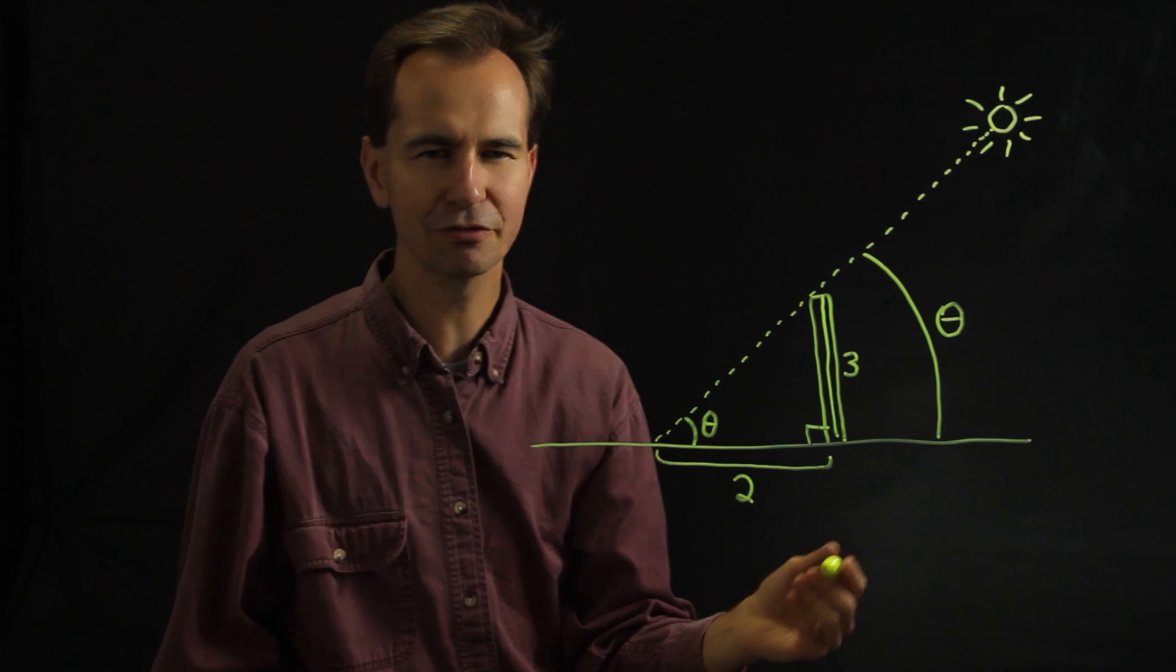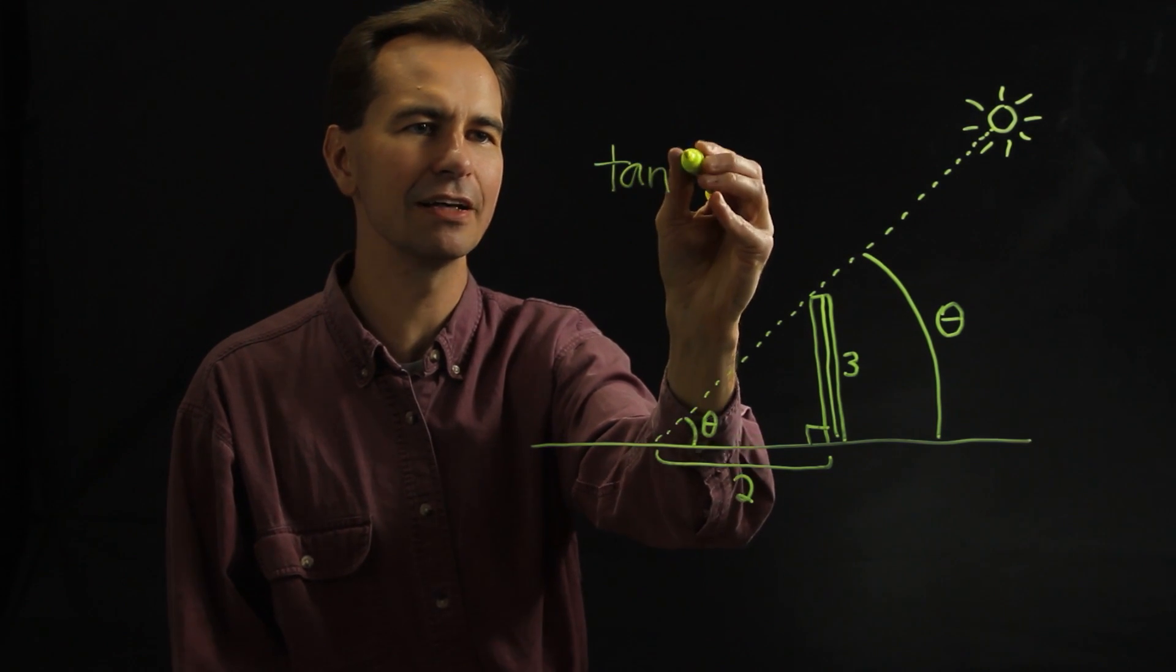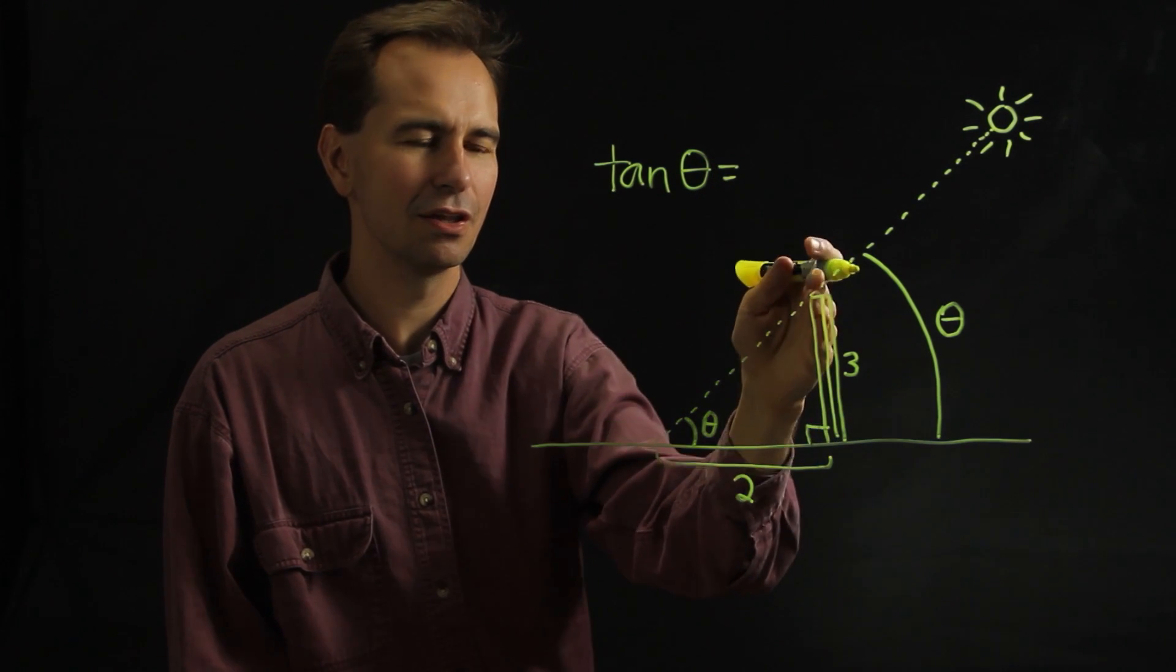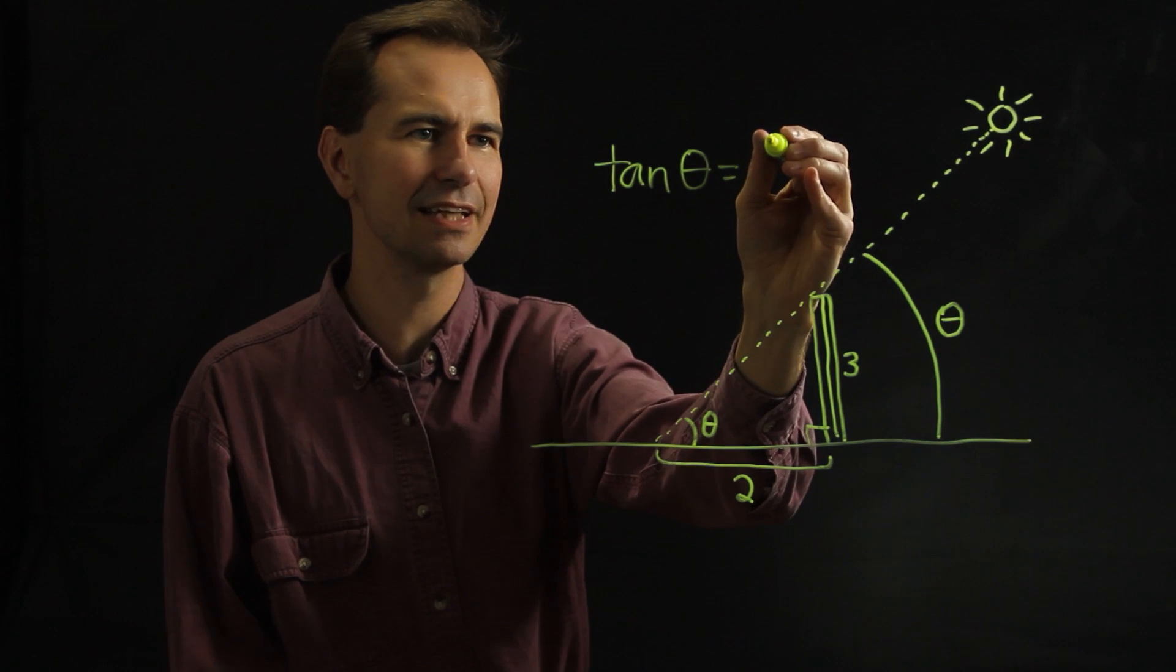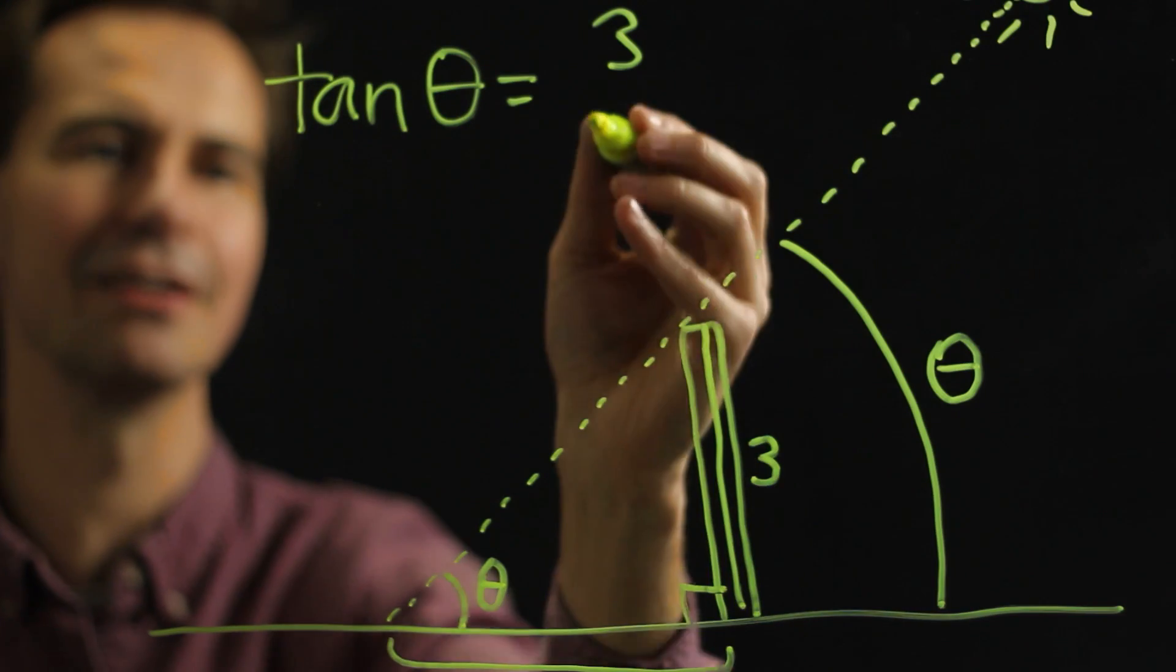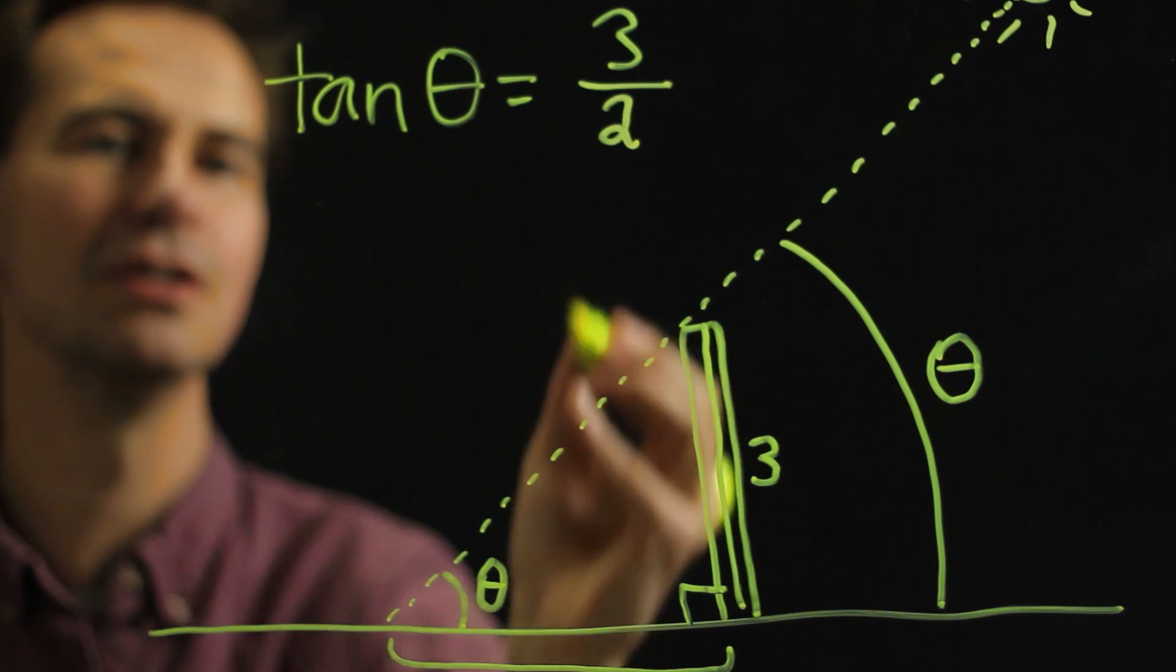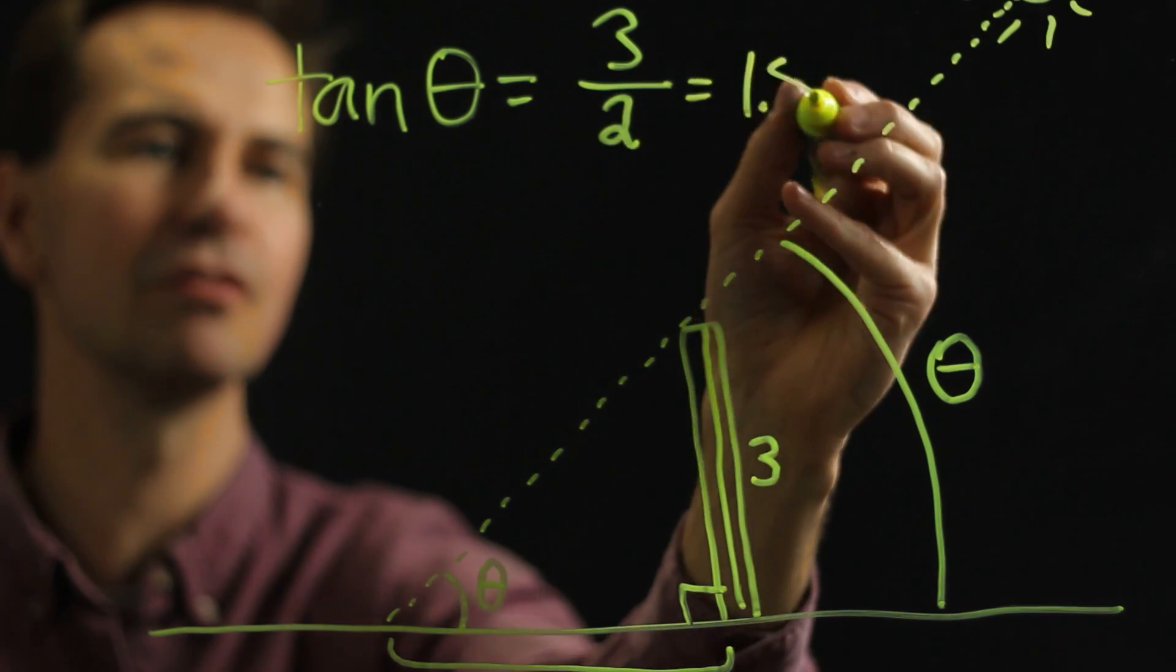If you remember from trigonometry, the tangent of an angle is equal to the length of the side opposite the angle. So in this case, that's 3 divided by the length of the side next to the angle. So in this case, that's 2. So the tangent of this angle is 3 halves or 1.5.